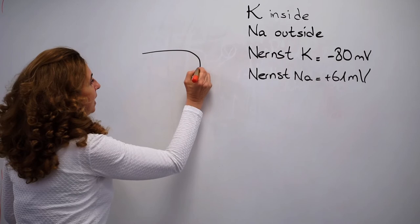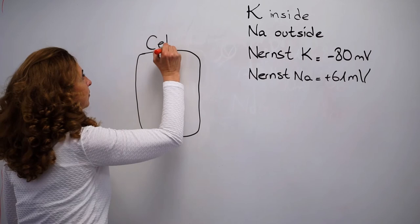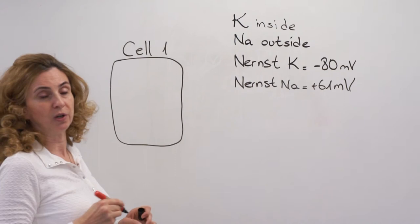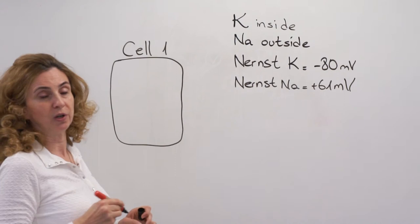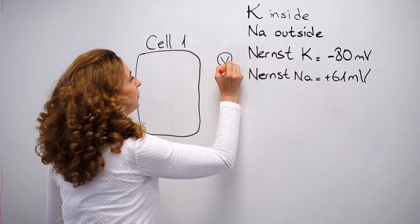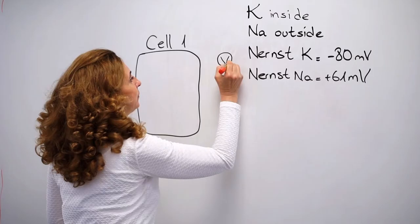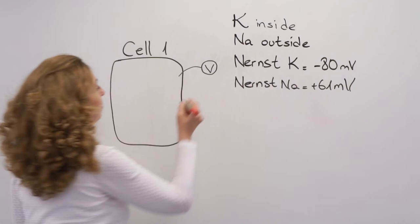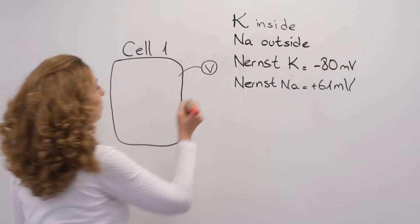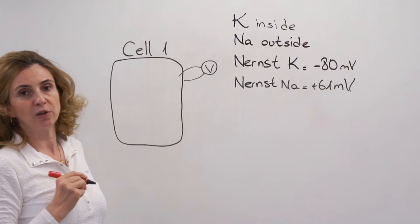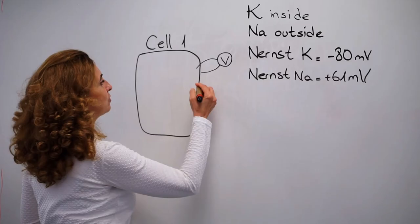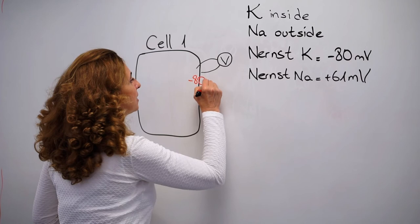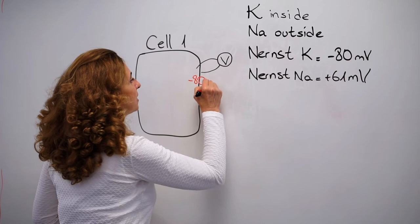This is our cell number one. How are we going to measure the resting membrane potential? We can use a very sensitive voltmeter connected to very fine electrodes. We place one electrode on the inner side of the membrane and the other one on the outer side of the membrane to measure the resting membrane potential. In cell number one, when we measure the resting membrane potential, we find that it is minus 80 millivolts.